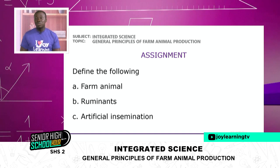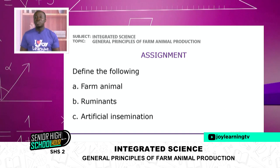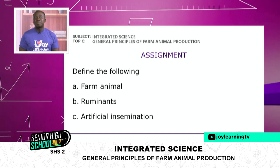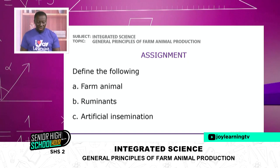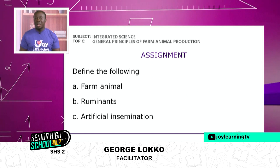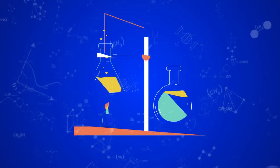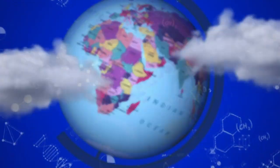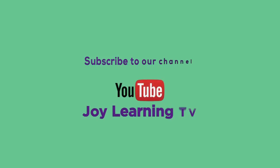I cannot sign out without giving you an assignment. Your assignment for today is to define the following: farm animals, ruminants, and artificial insemination. Please read more, ask more questions, and answer more questions. You can share it with us — all these videos will be on social media, on MyJoyOnline, YouTube, and other Joy Learning social media handles. Soon our time is up — I am George Loko, your Integrated Science Facilitator from St. Mary's Senior High, Kolebu. Thank you. Subscribe to our YouTube channel, Joy Learning TV.